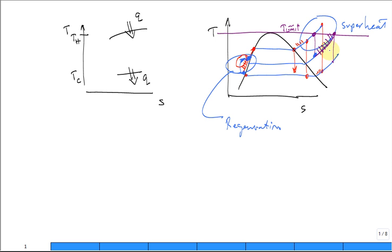So superheat, reheat, and regeneration are three strategies to improve the thermal performance.